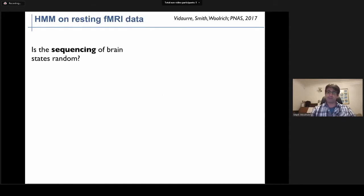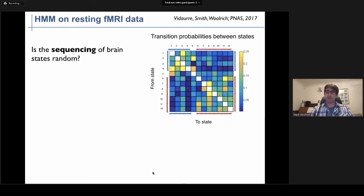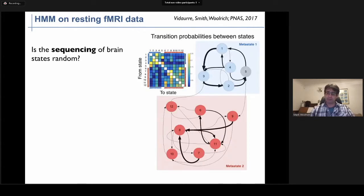We then wanted to see if we could identify interesting temporal structure in the dynamic sequences of states, or whether they're just completely random. For this, we can look at the transition probability matrix that the hidden Markov model provides us. This tells us about the probability of going from any one of the 12 states we inferred to any other of the 12 states. We can do a modularity analysis to investigate this further.